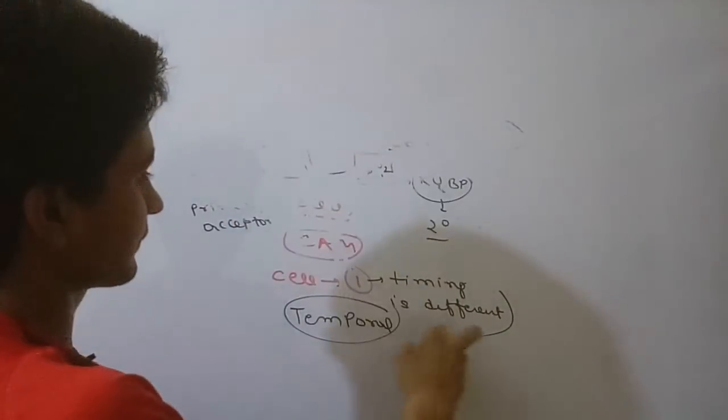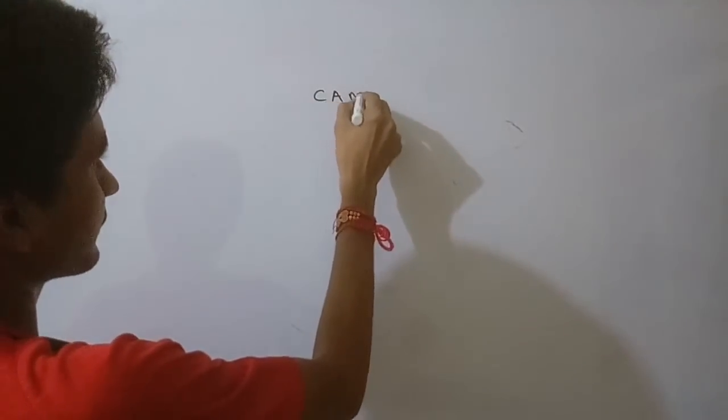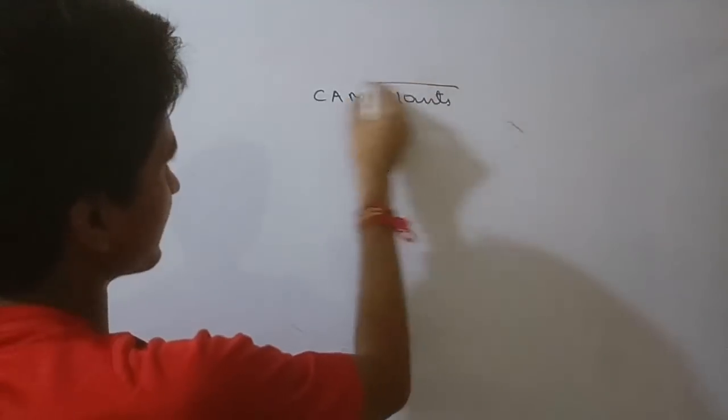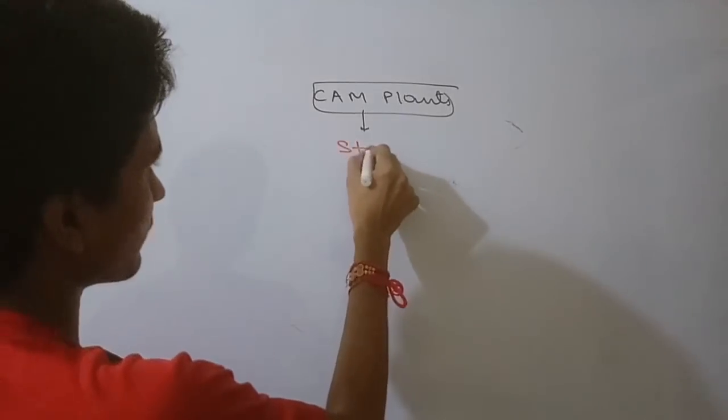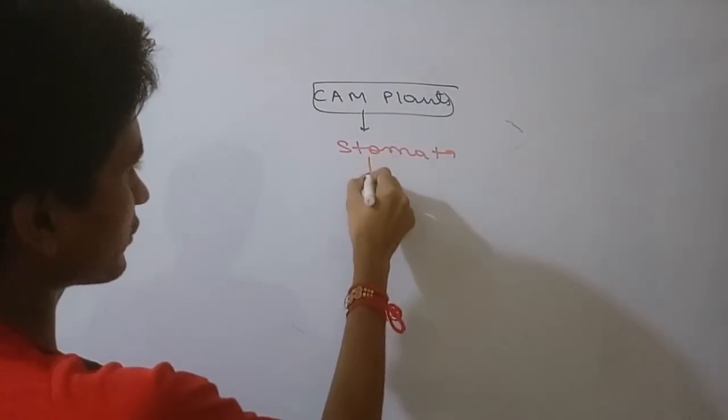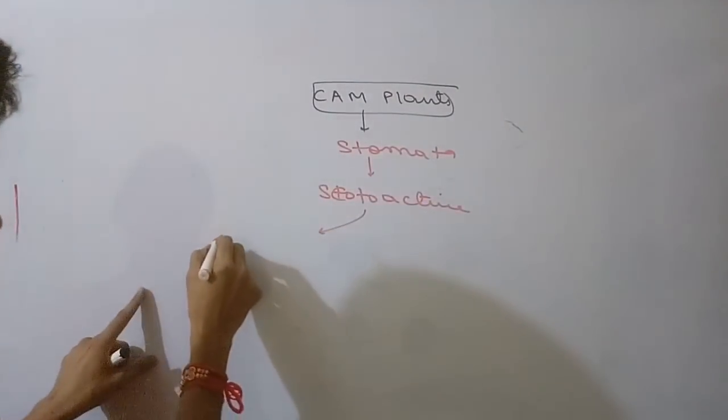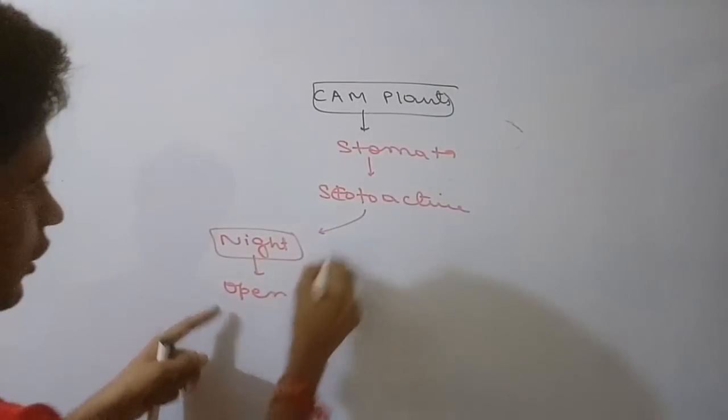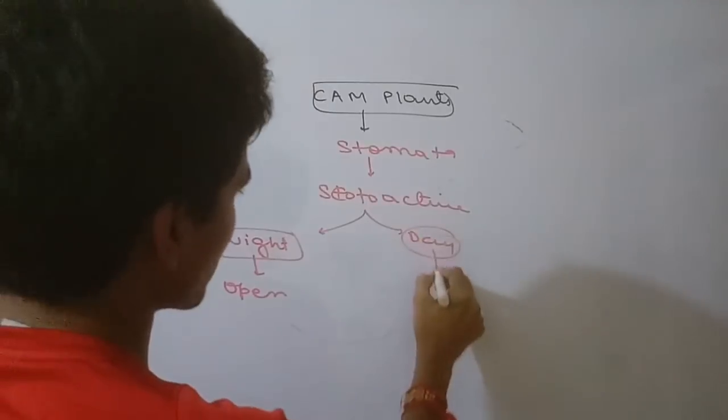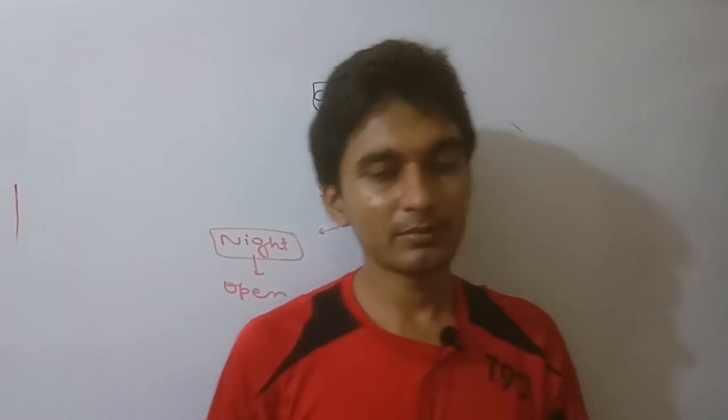CAM plants have important features. They are succulent plants. The most important feature is the stomata behavior. Stomata close during daytime when temperature is very high to prevent water loss. At night time, stomata open.